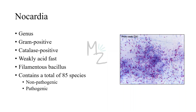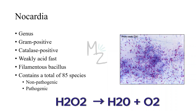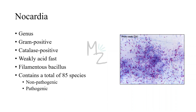Nocardia is a genus. Members of that genus are gram positive, meaning they stain purple on gram staining. Members of that genus are catalase positive. Catalase is an enzyme released by certain bacteria that converts hydrogen peroxide into water and oxygen. The oxygen produces bubbles — if you see bubbles, the test is positive and the bacterium is catalase positive; no bubbles means catalase negative. Nocardia are weakly acid fast bacteria.